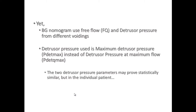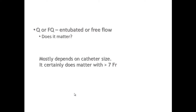Blaivas and Groutz claim that P-det-max and P-det-Q-max are statistically similar in a given population, and they might be right. But in the individual patient, that is not always the case. Furthermore, the need to use free flow may have been justified with catheters larger than 7 French; but nowadays we use catheters smaller than 5 French, and some studies have shown no obstructive effect with these thinner catheters.